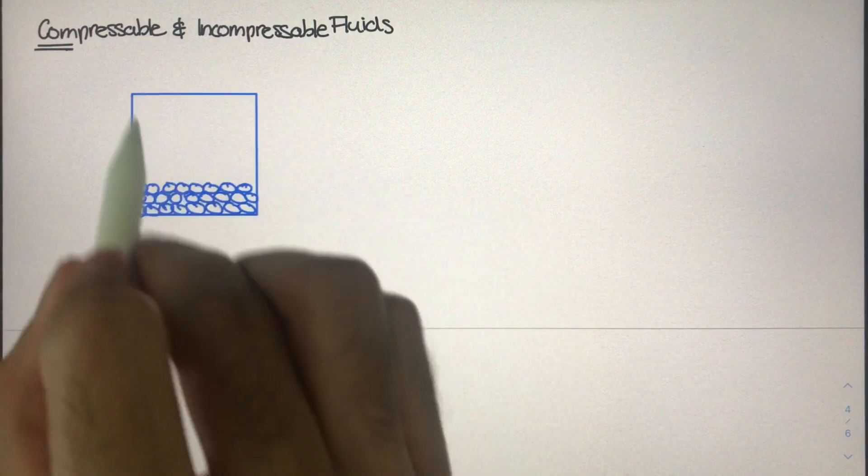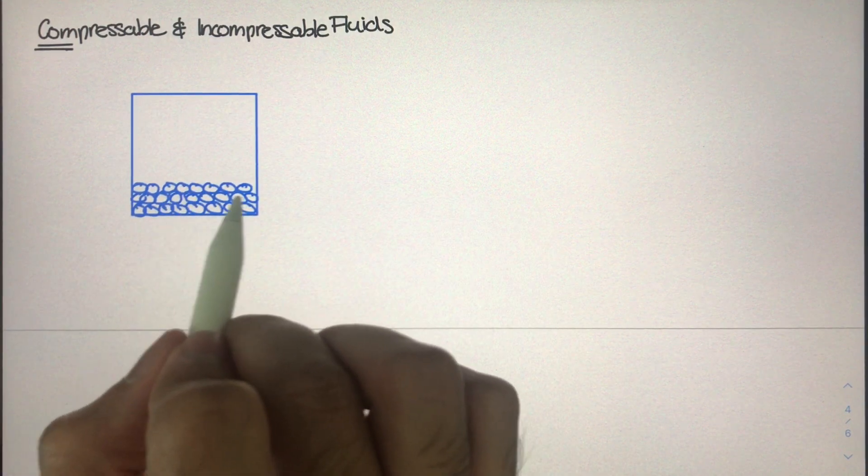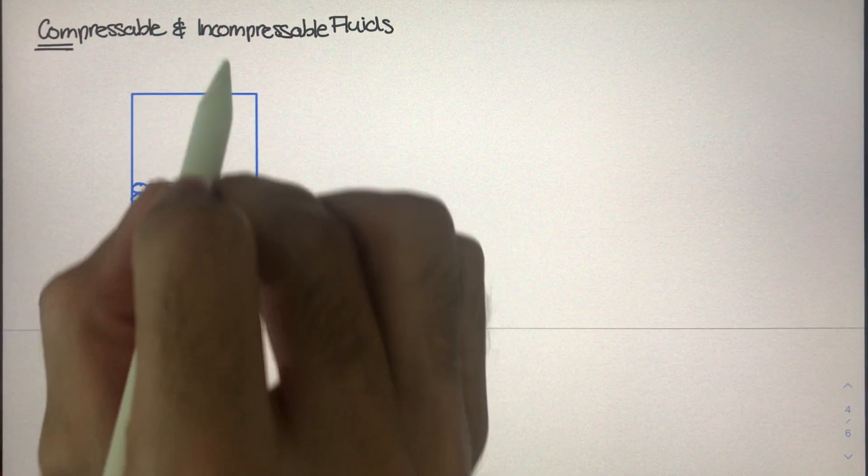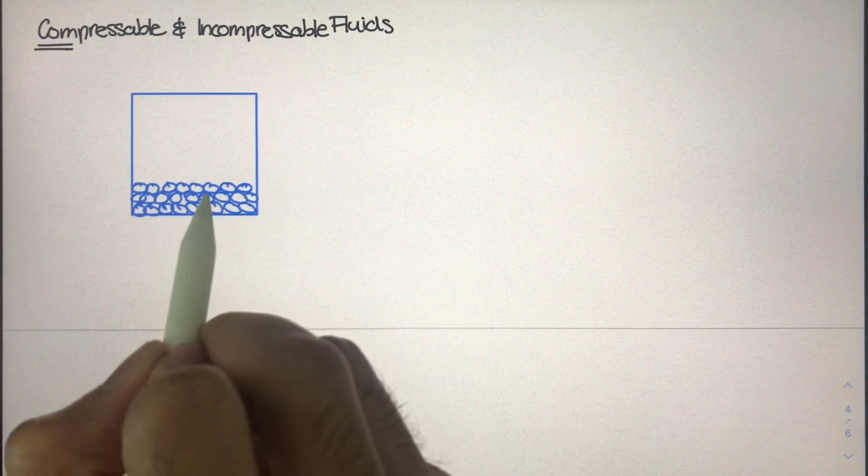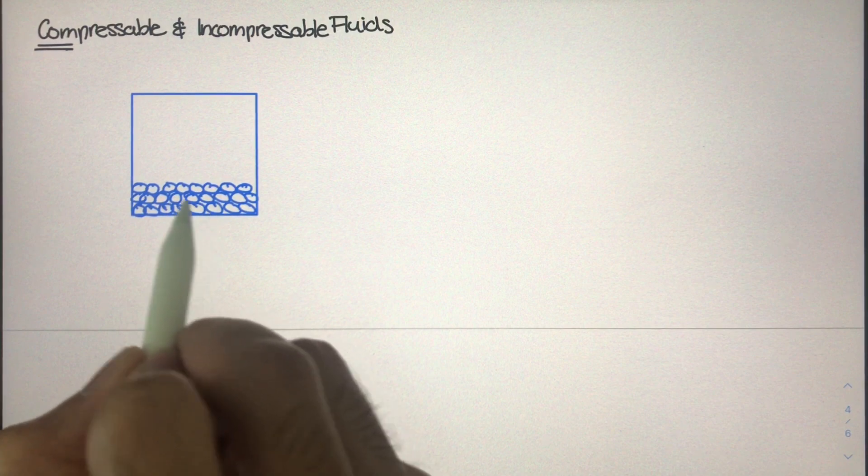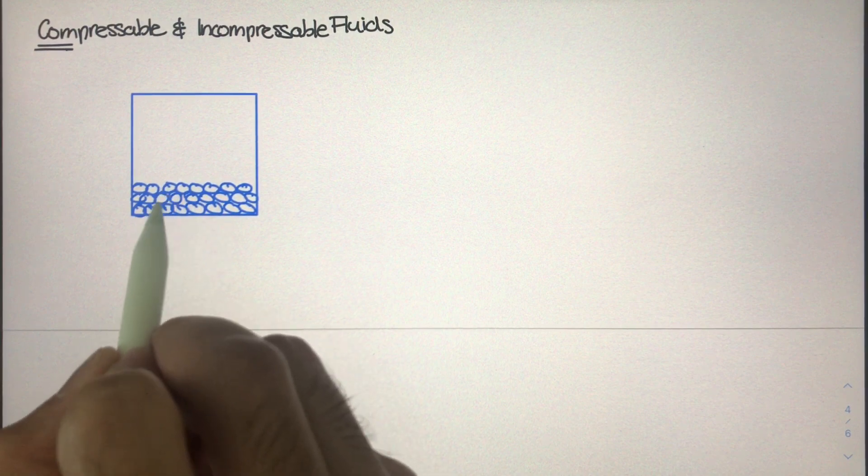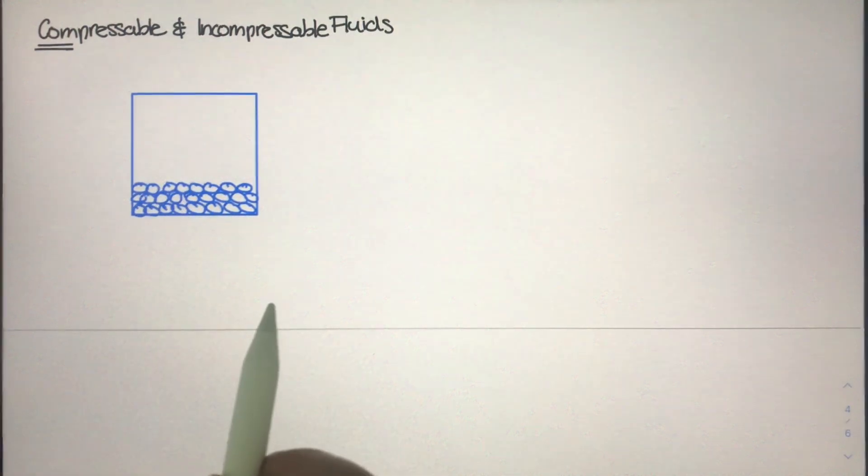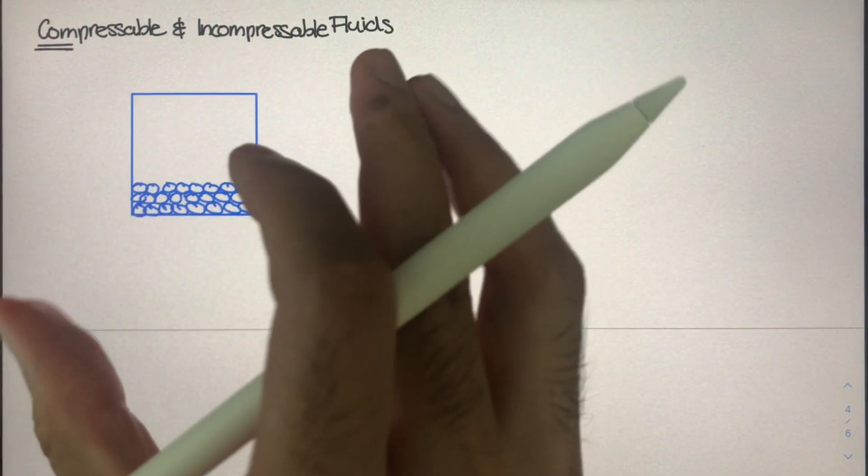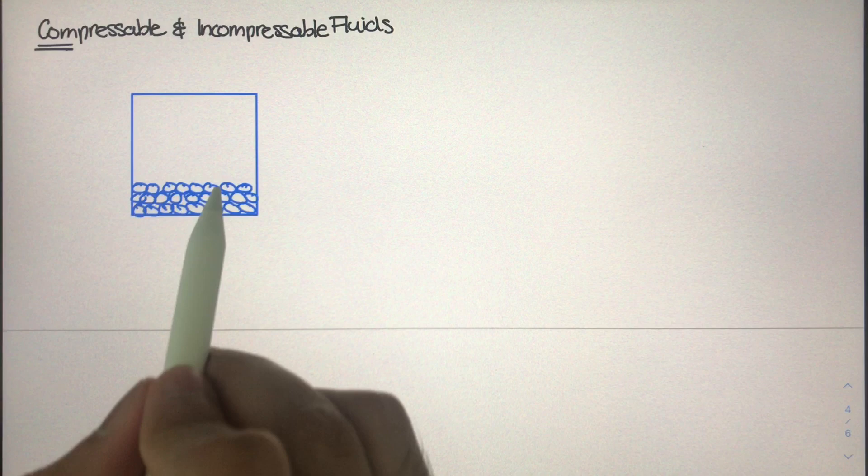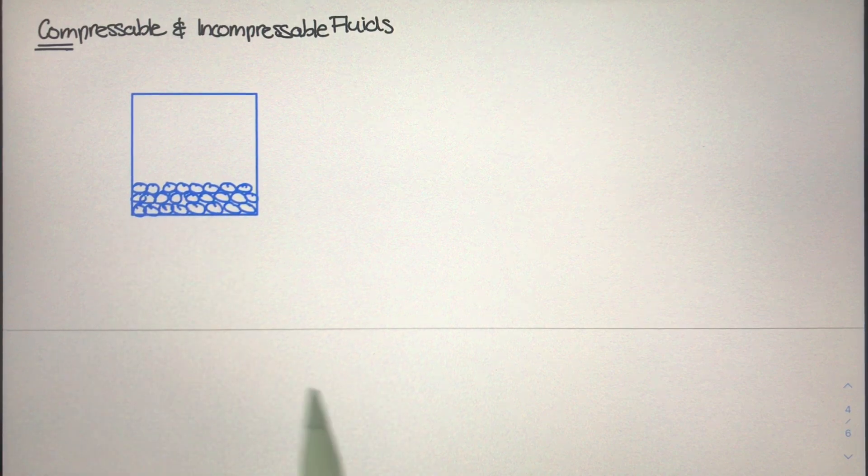So the reason we call liquids incompressible fluids is because each of these water molecules are closely packed to one another. In other words, there's hardly any space left between each of these molecules. So if you were to come into this container and try to squeeze the water molecules even closer together, you could not do so.